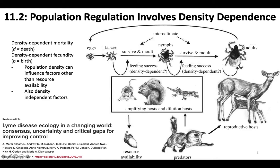In this figure, they had some areas which they think might be density dependent within the tick life cycle. They suggest that the feeding success of the larvae might be dependent on how dense the population is in the environment, and the same with the feeding success of the nymphs. Their ability to find hosts that amplify Lyme disease — and then allow it to carry through the tick population — might depend on how dense both their host populations and the tick populations themselves are. That's just an example of density dependence.